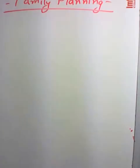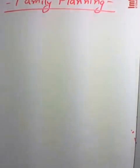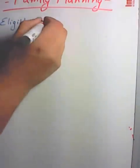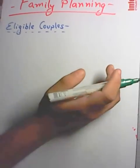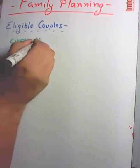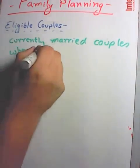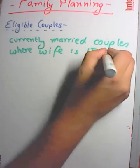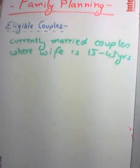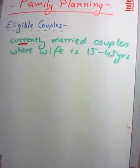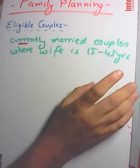Now, what are eligible couples? Eligible couples refers to currently married couples wherein the wife is in the reproductive age group — between 15 to 45 years. The term 'currently' is really important here. Those are eligible couples.